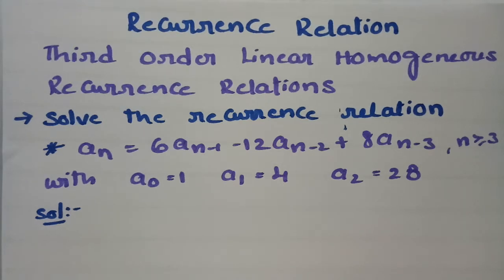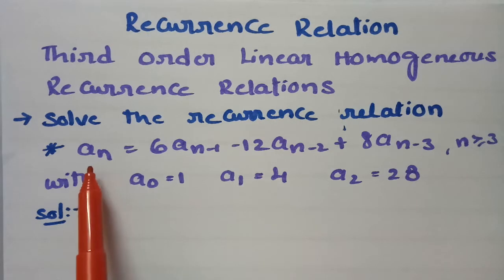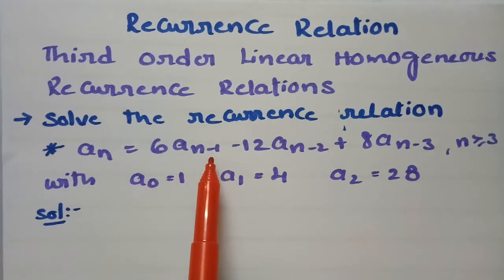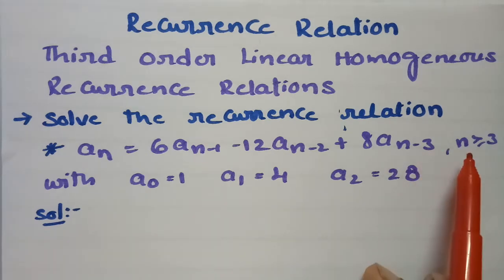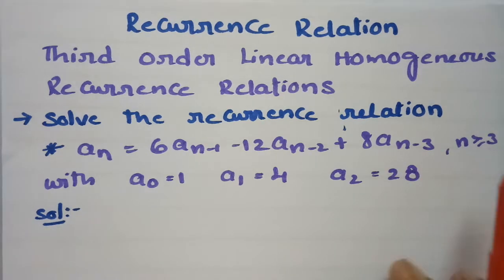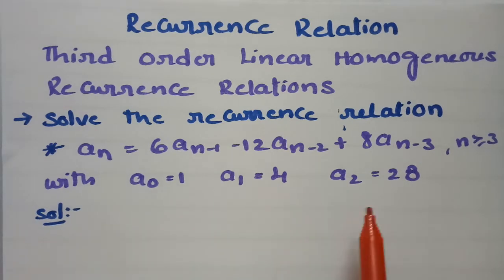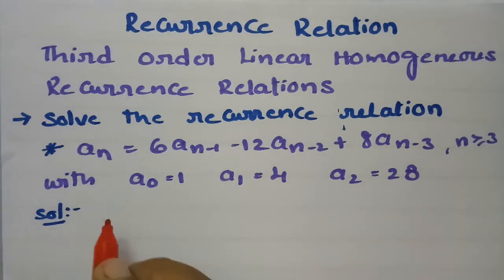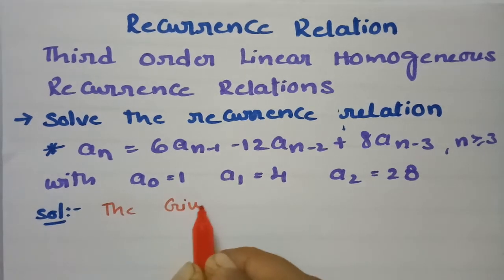In today's video I am going to give solutions for a third order linear homogeneous recurrence relation, related to discrete mathematics. I am going to solve the recurrence relation: a_n = 6·a_{n-1} - 12·a_{n-2} + 8·a_{n-3}, for n greater than or equal to 3, with initial conditions a_0 = 1, a_1 = 4, and a_2 = 28.